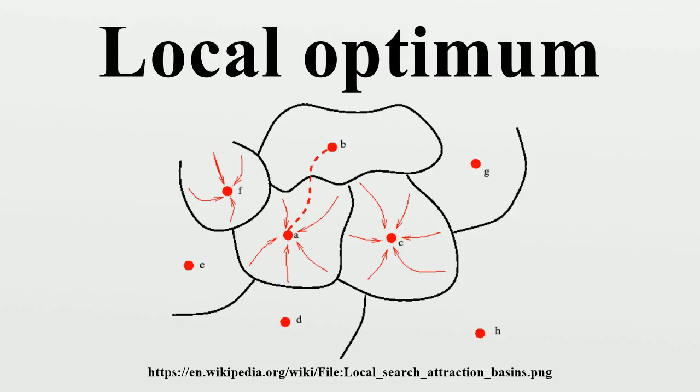If the problem to be solved has all locally optimal points with the same value of the function to be optimized, local search effectively solves the global problem. Finding a local optimum delivers a globally optimal solution.